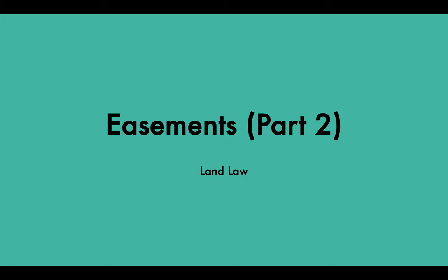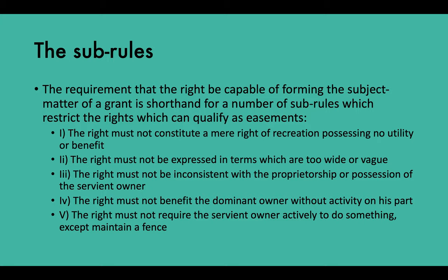The fourth requirement is that the right is capable of forming the subject matter of a grant. This is shorthand for a number of sub-rules which restrict the rights which can qualify as easements: the right must not constitute a mere right of recreation possessing no utility or benefit; it must not be expressed in terms which are too wide or vague; it must not be inconsistent with the proprietorship or possession of the servient owner; it must not benefit the dominant owner without activity on his part; and it must not require the servient owner actively to do something, except maintain a fence.